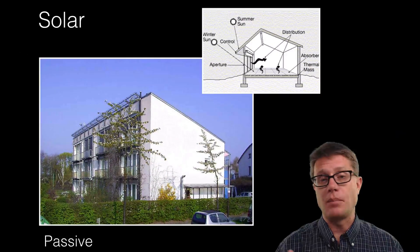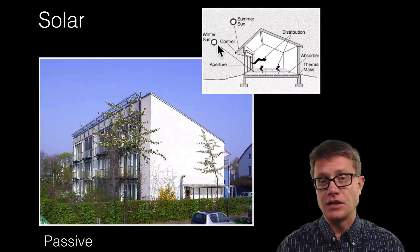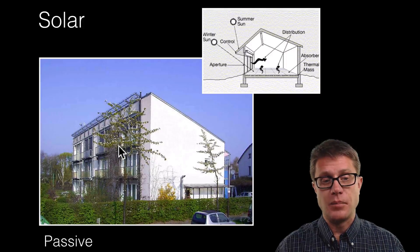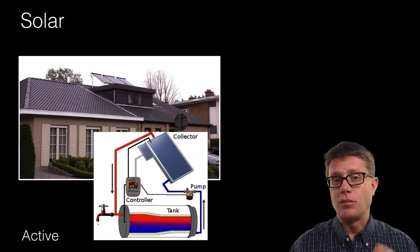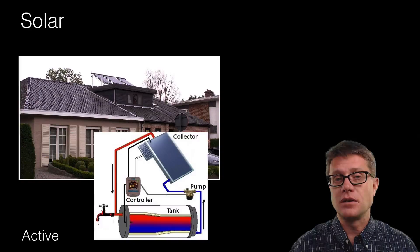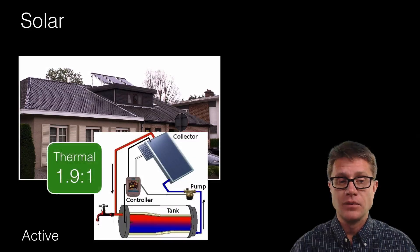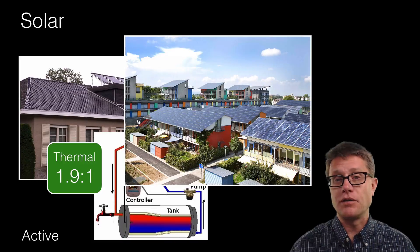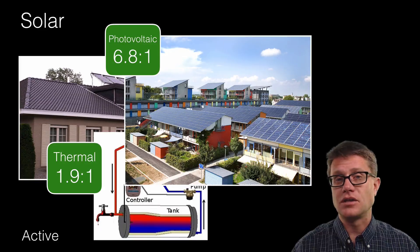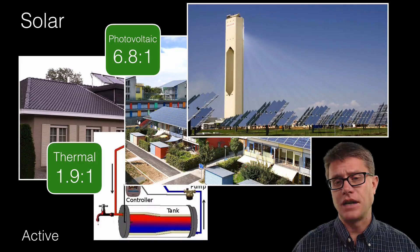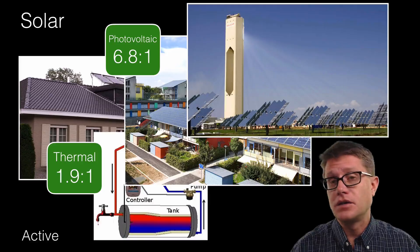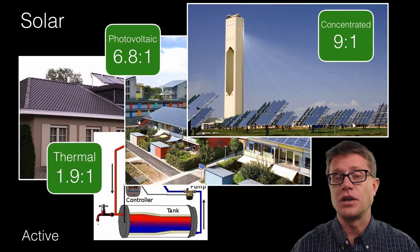For solar energy, passive systems simply let light in — especially during winter — and collect it. An example is a house with all windows on the south-facing side and heavy insulation to hold thermal heat inside. Active thermal heating systems heat up water to warm the house but have a low return on investment. Photovoltaics, which convert sunlight directly into electricity, have seen huge growth, with a ratio closer to 7-to-1. Giant concentrating power plants that focus energy on one point to heat water and generate steam electricity achieve an even higher ratio.